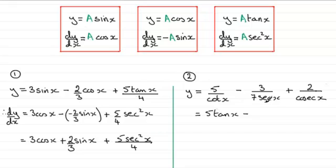Looking at the next term, minus 3 over 7 sec x—well, sec x is 1 over cos x, so I can simplify to 3/7 cos x. For the last term, 2 over cosec x—cosec x is 1 over sine x, so this is the same as 2 sine x. Now we can differentiate.